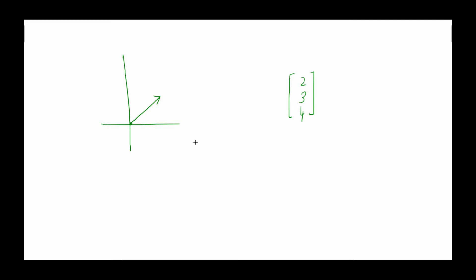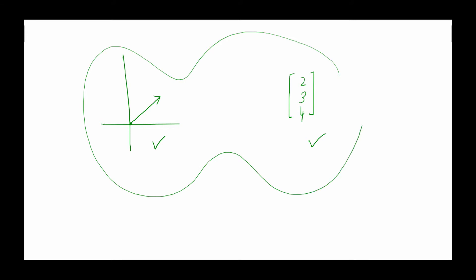For a mathematician, the vector is nothing but an element of a vector space. In fact, the vector space is a general concept that includes the physicist's directed vector and the computer scientist's array of numbers. I am going to include all of these together and call them elements of a vector space — that is going to be our definition.